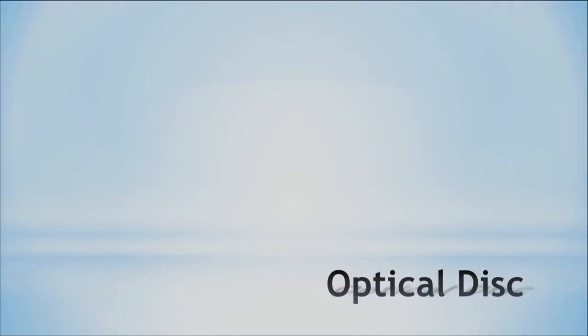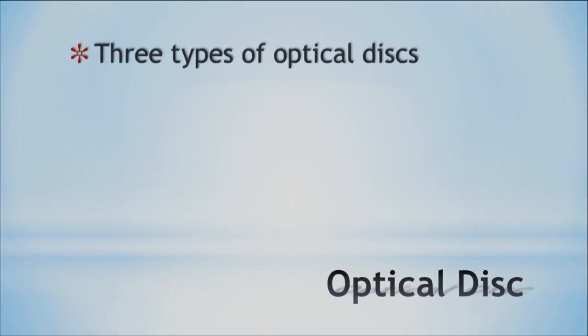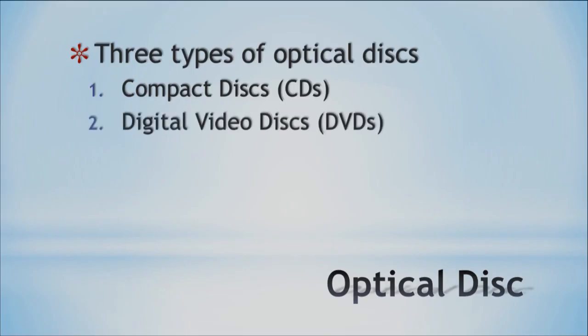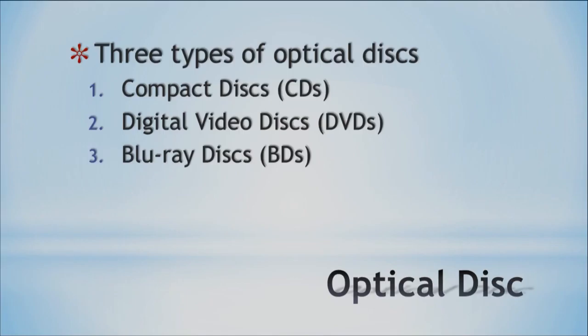Let's check out the different kinds of disks we have. For optical disks, we've got three kinds these days. One is the compact disk, called CD. Another one is the digital video disk — DVDs, what we usually say. And finally, what we call Blu-ray. Each one has its positives and negatives — advantages and disadvantages.